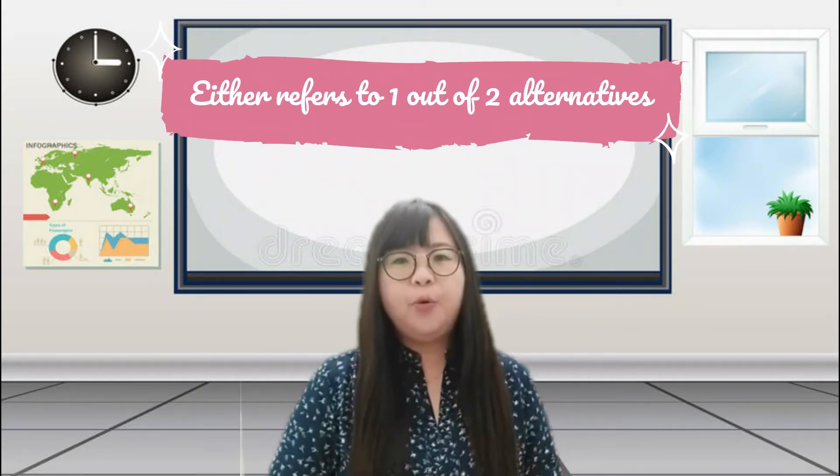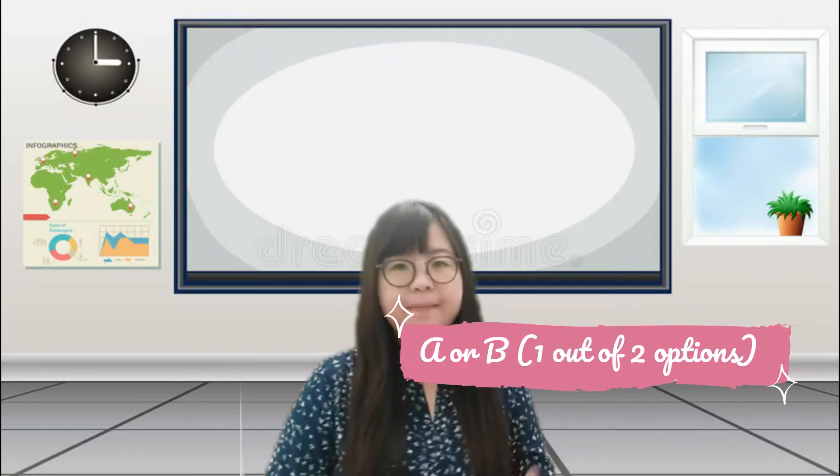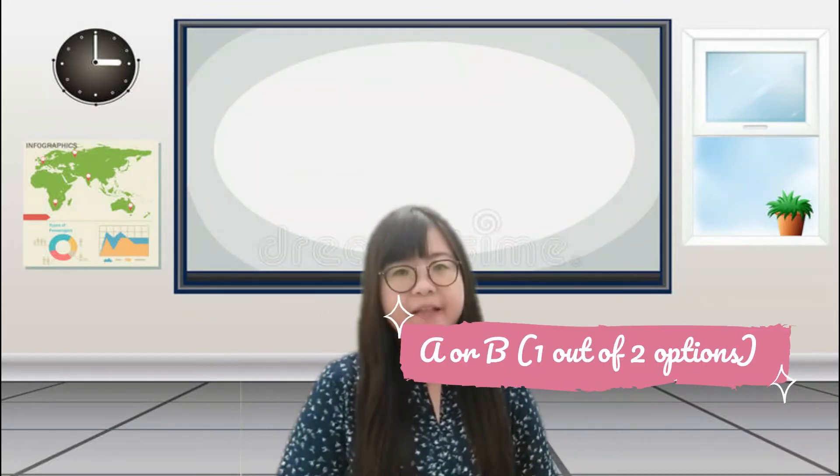Let's go to the second word, which is either. Either refers to one out of two alternatives, so you have to choose A or B. For example, you can say 'I can either speak English or French. Which one is easier for you to understand?' By stating this question, the speaker wants to ask you which one is easier for you to understand - English or French. You have to choose one out of two choices or one out of two alternatives.